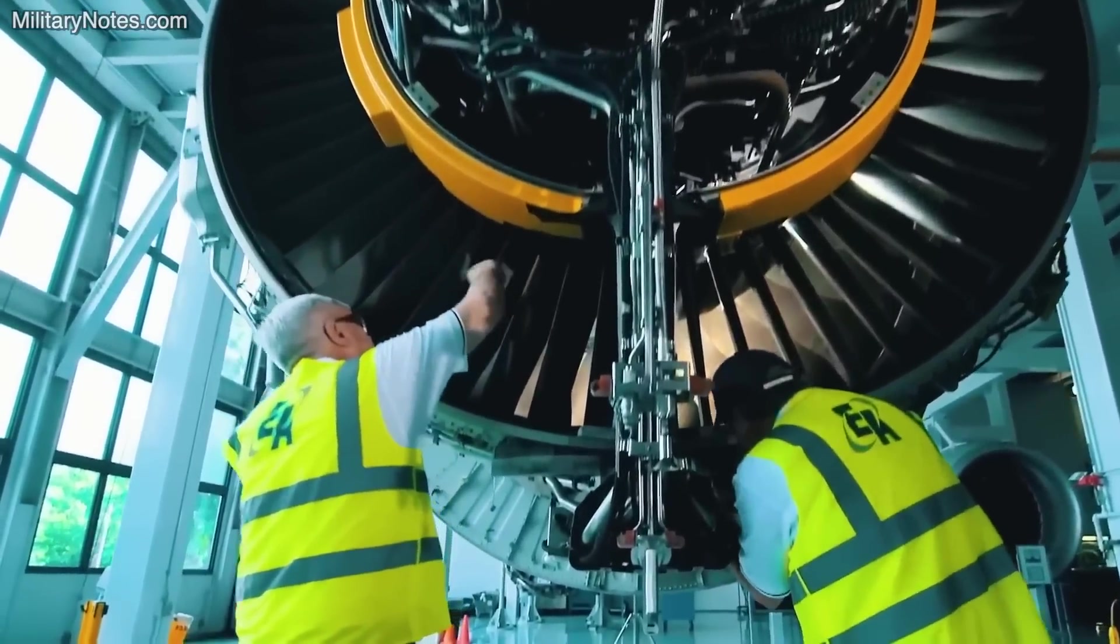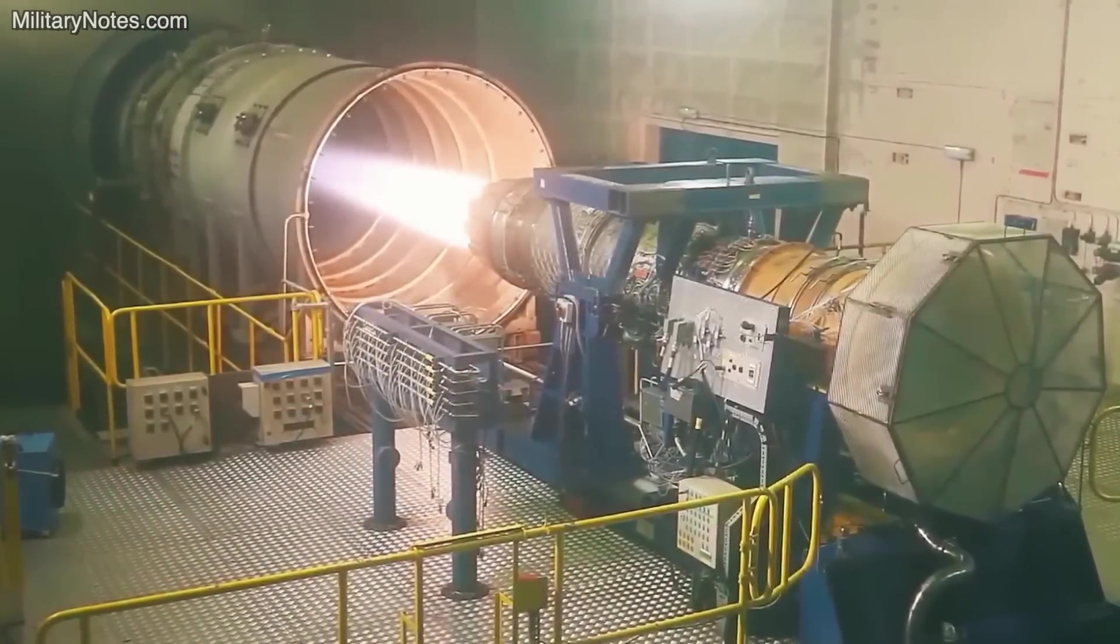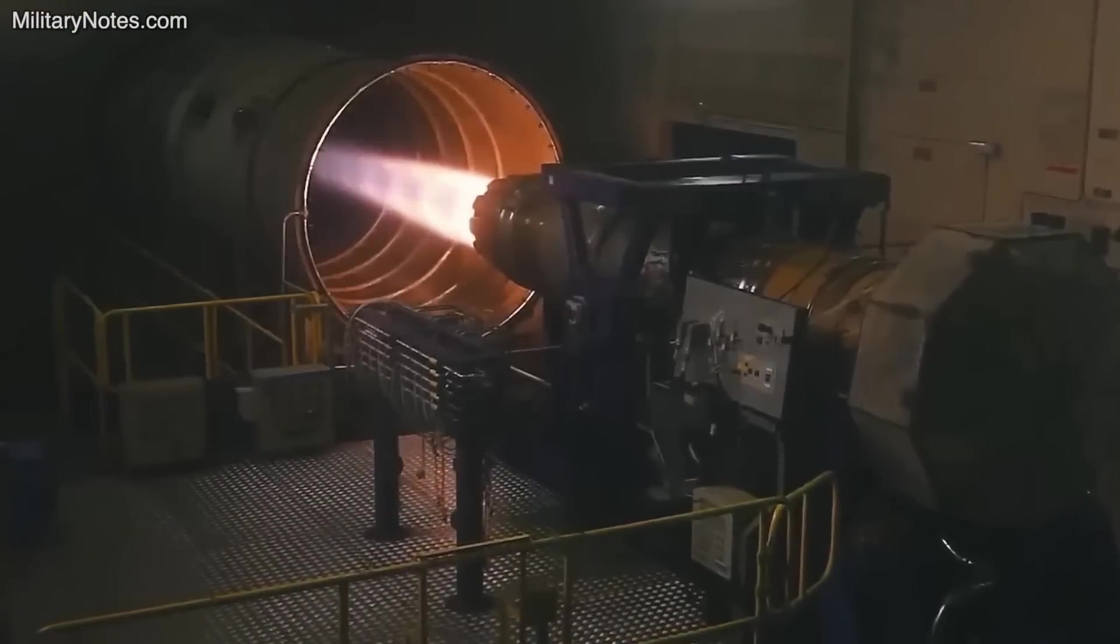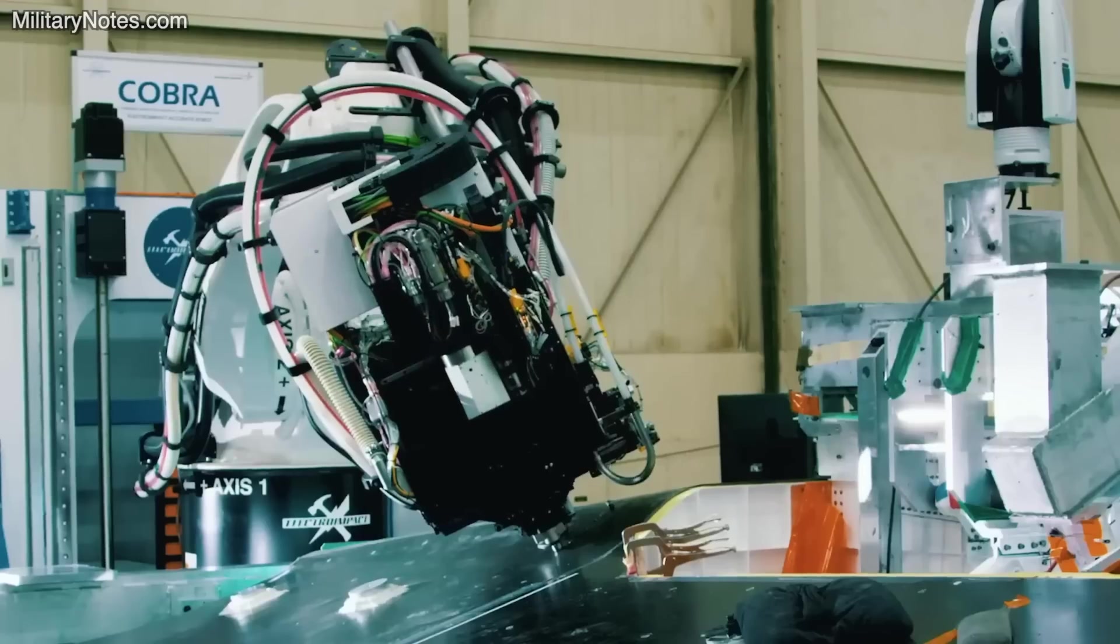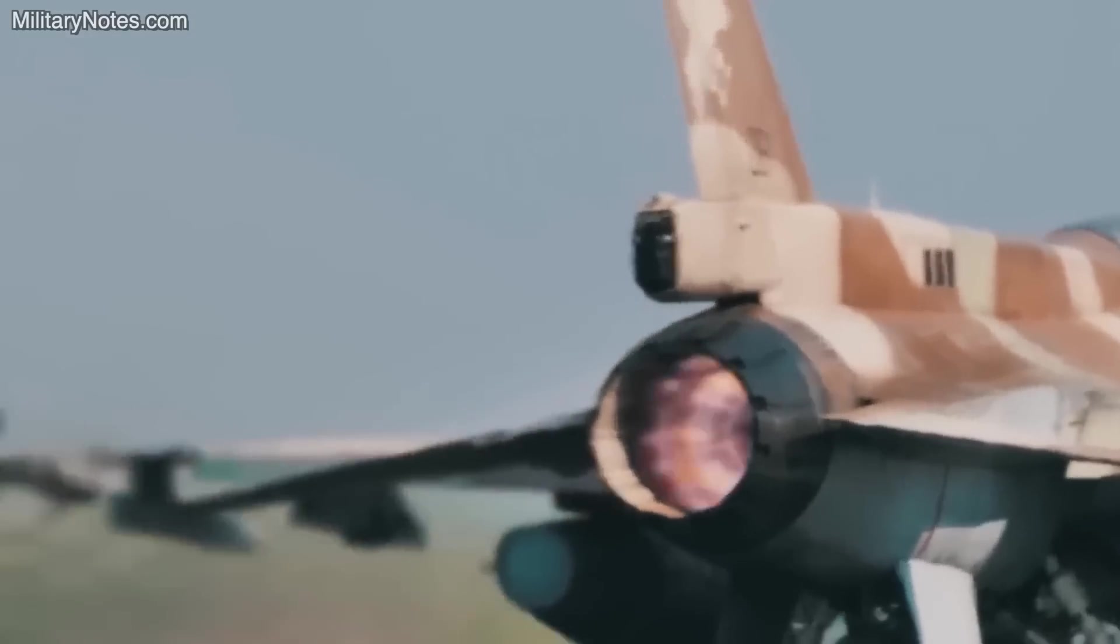The turbojet is engineered to operate from a standstill up to Mach 3.3, while the ramjet functions in a traditional range from approximately Mach 2.8 to over Mach 3 and beyond, propelling the aircraft to Mach 5.